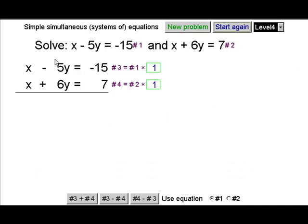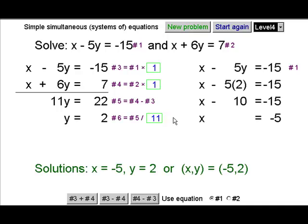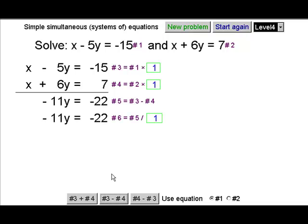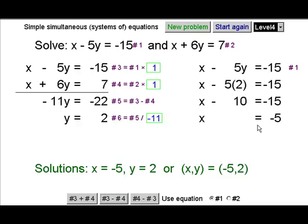Start again, this time do some subtracting right from the start. Let's take the top away from the bottom like that. Once again dividing through by eleven is going to allow us to continue. Or else we do the subtracting the other way round. Take the bottom away from the top, this time we're left with a negative eleven so we divide through by that negative eleven. And we continue getting the same answer in each of the three different ways.